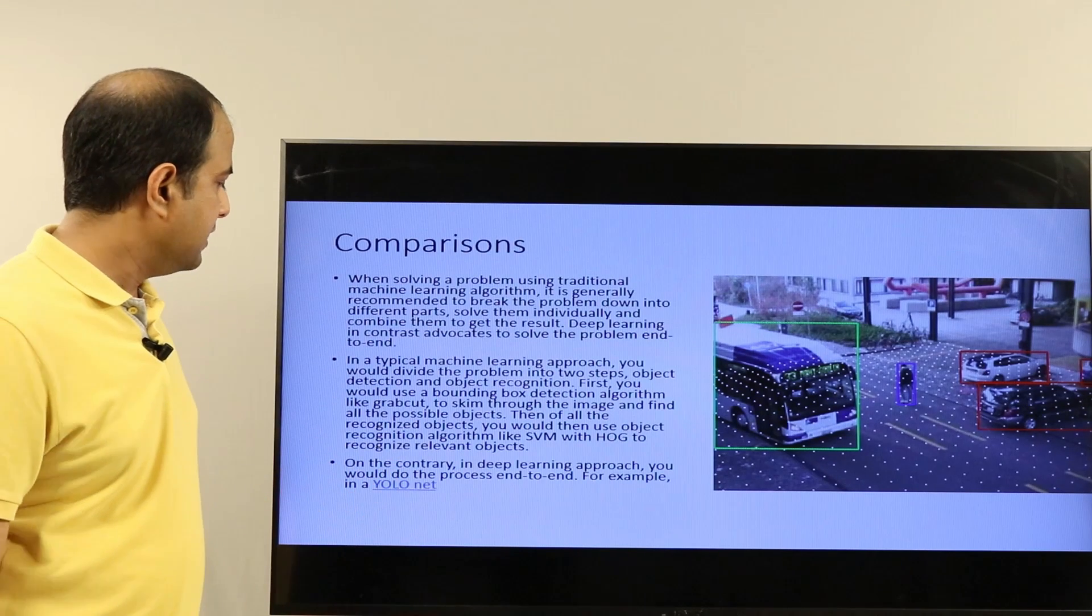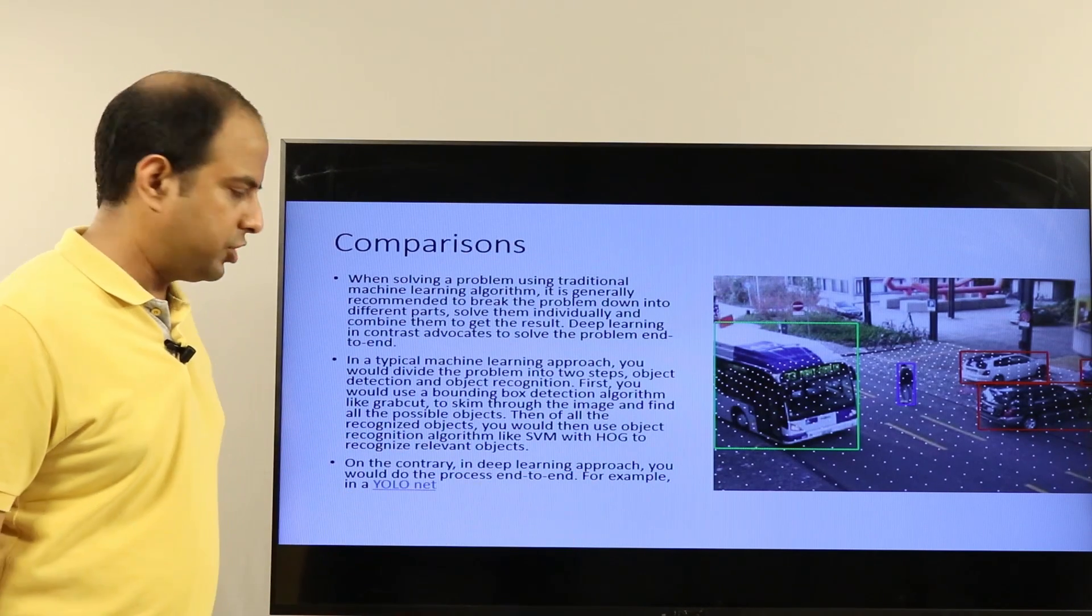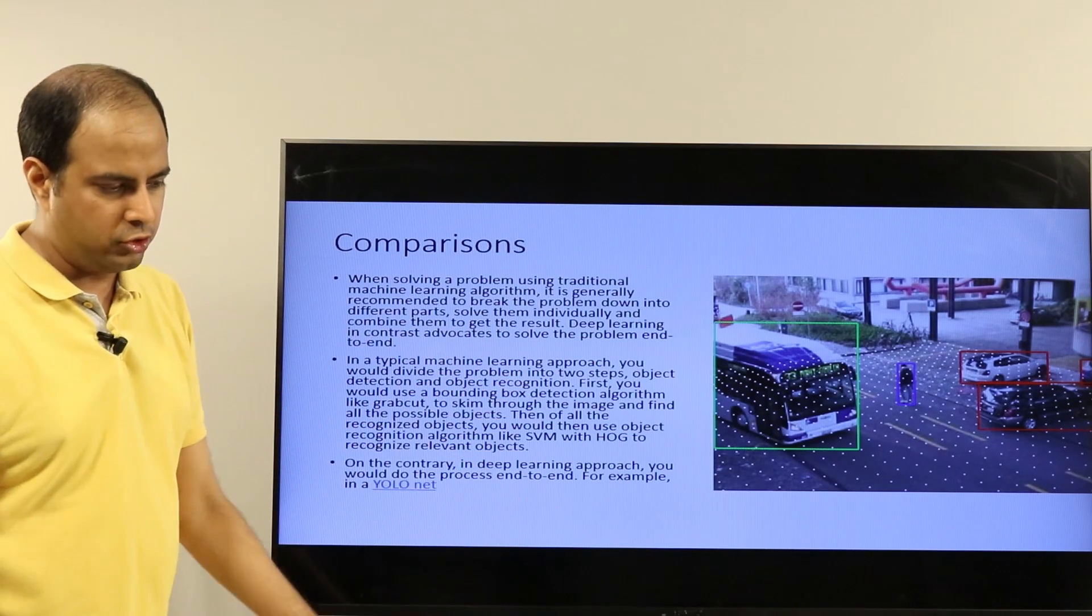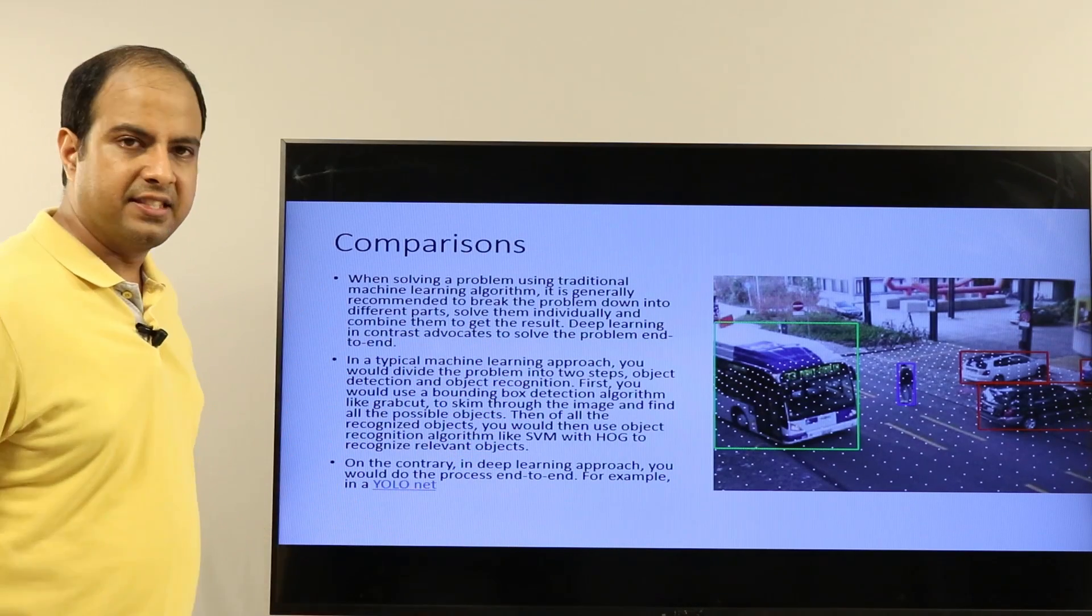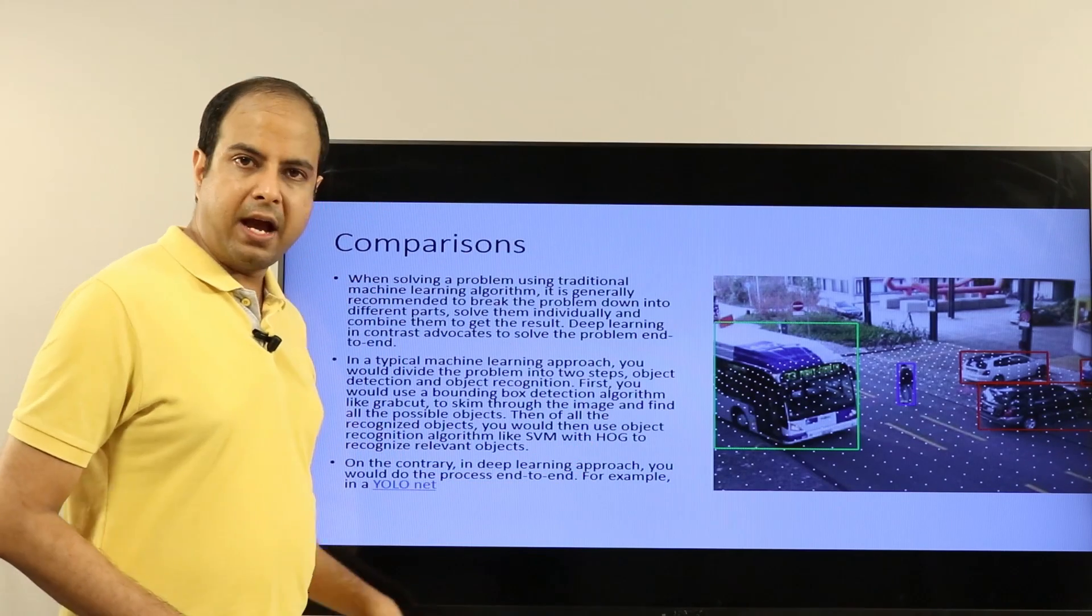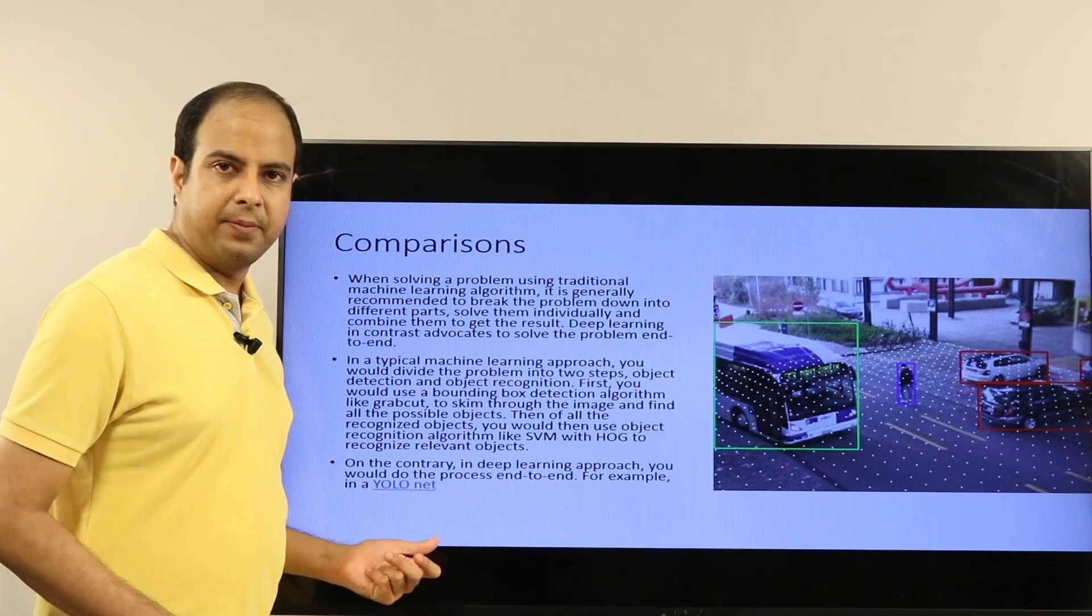On the contrary, in a deep learning approach you would actually do the process end-to-end. In deep learning you usually don't want to split things but do things in a joint way. You would want to do this in an end-to-end manner, for example check out something called YOLO Nets which try to do these things together.